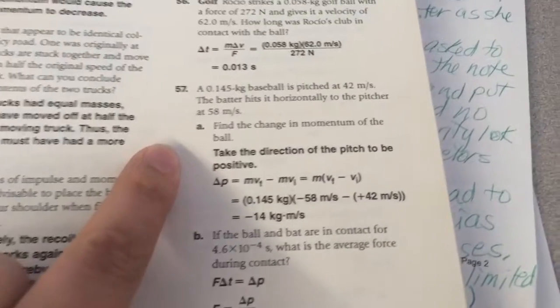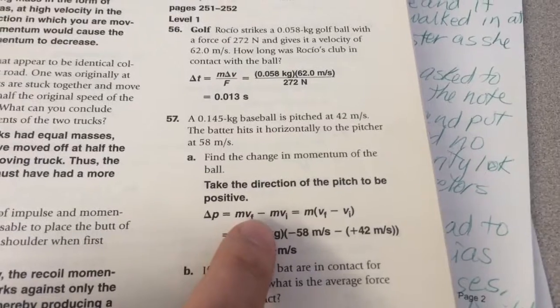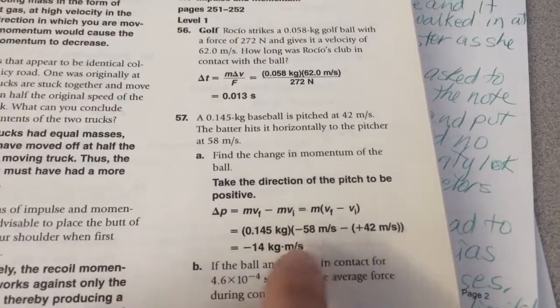For 57, change in momentum is going to be the mass times the final minus the mass times the initial, just like we did today in class, plugging in, solving.